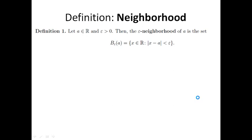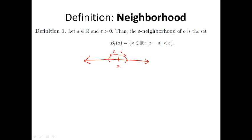To begin, let's formally define neighborhood. We've seen this definition before in the context of convergence, but we never really formalized it. Let a be a real number and epsilon be a positive number. Then the epsilon neighborhood is the set denoted B sub epsilon of a, and this is simply all numbers which are epsilon close to a. As a picture, I give you a point a and some epsilon tolerance around that point, and everything within this open interval is the neighborhood. This is simply equal to the open interval from a minus epsilon up to a plus epsilon.